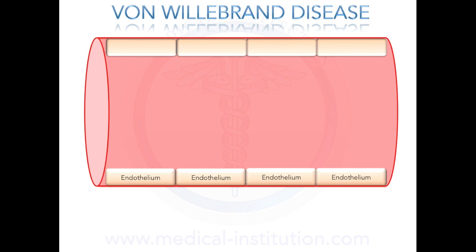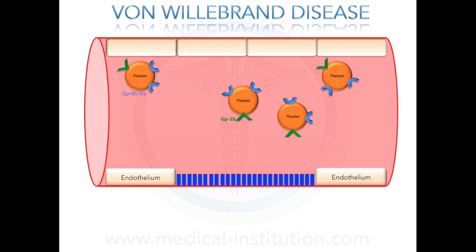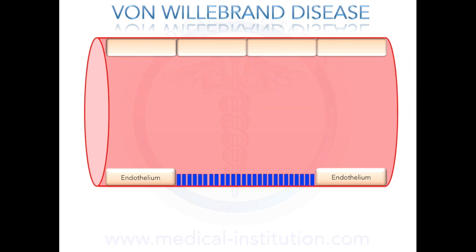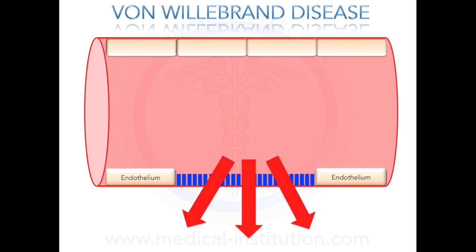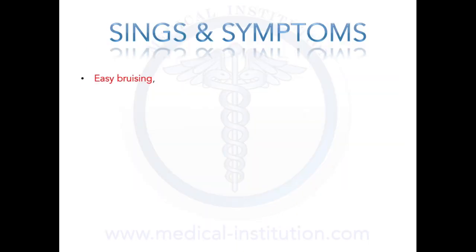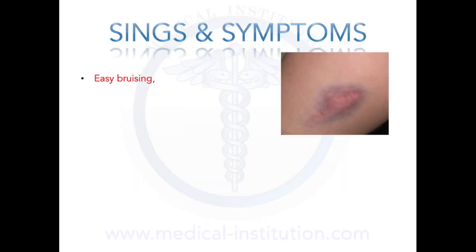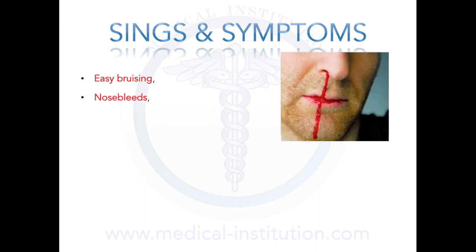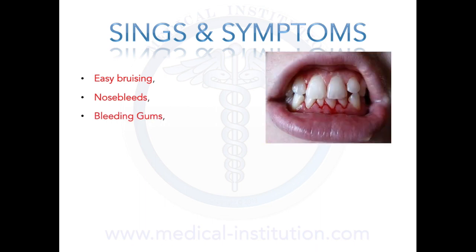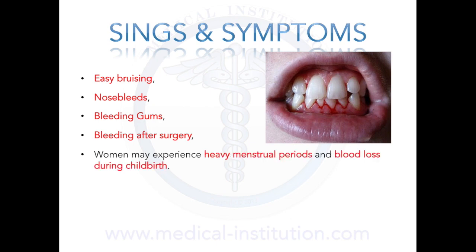In von Willebrand disease, the decreased levels of von Willebrand factors result in problems with platelet adhesion. Therefore, platelet aggregation does not get activated since there are no von Willebrand factors. This results in superficial bleedings such as easy bruising, nosebleeds, bleeding gums, bleeding after surgery, and some women may experience heavy menstrual periods and blood loss during childbirth.